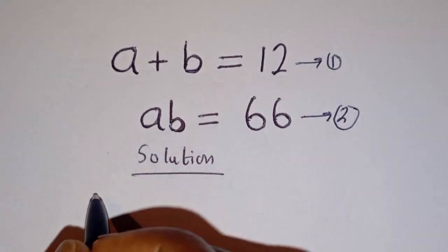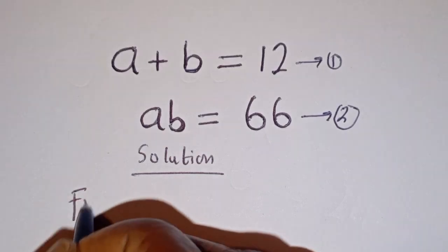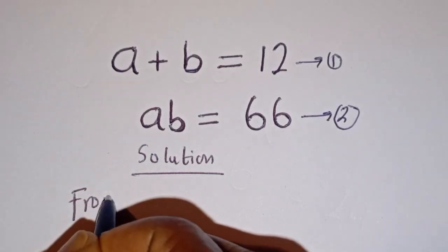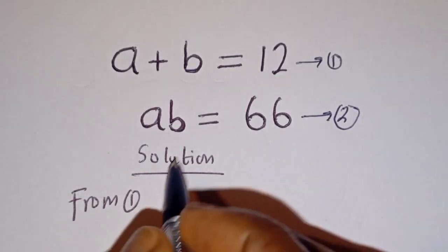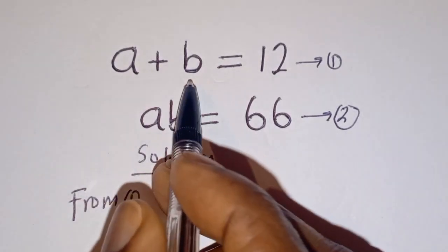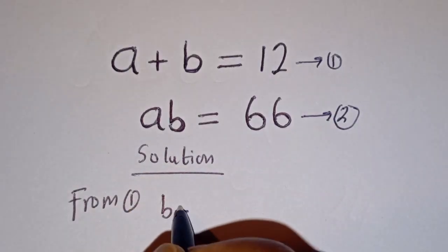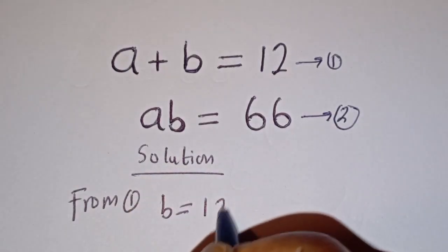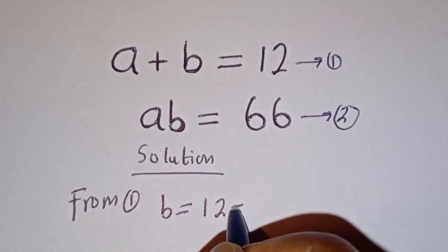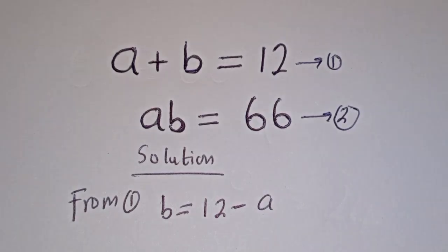Now from equation 1, let's make B the subject of the formula. B is equal to 12 minus A.